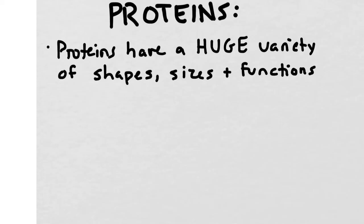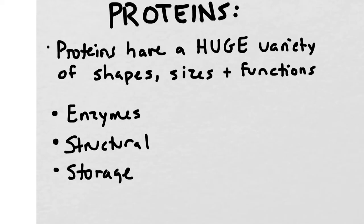Now let's move on to proteins. So proteins have a huge variety of different shapes, sizes, and jobs in the body, and there are a lot of different examples, but here are just a few. So there are proteins that are called enzymes, we have structure proteins that help us to build the solid parts of our body, we have storage proteins, and then we also have hormonal proteins that work on signaling.